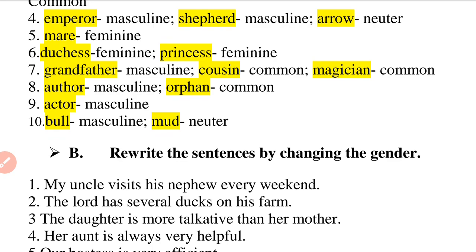Question number 8: 'The author is an orphan who was raised by his teacher.' Author is masculine gender and orphan is common gender.